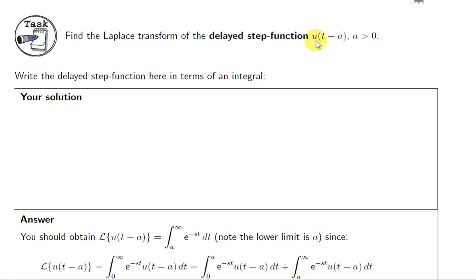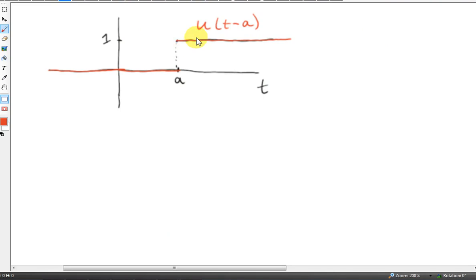We are going to look at the delayed step function u(t-a) where a is positive. We saw in previous videos that u(t-a) is a unit step function where the step occurs at a.